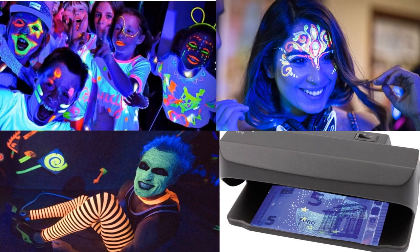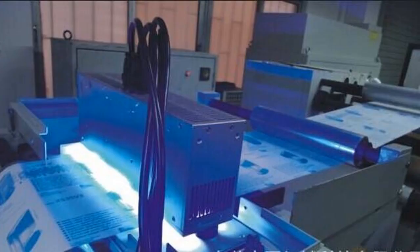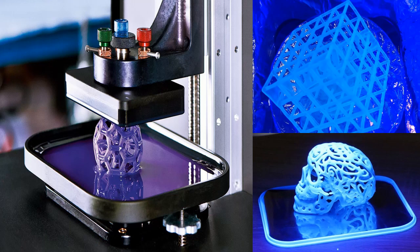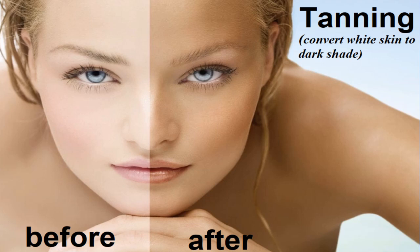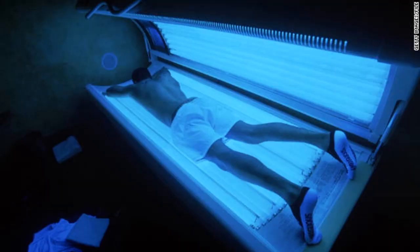UVA light is used as disco lights for fancy dress parties, for black light mimes, and for fake currency detection. UVA light is also used in lithographic and some special types of offset printing, and for UV curable liquid resin 3D printing. Short wavelength white UVA tubes are used for skin tanning because it induces more melanin production in skin. White people try to make their skin dark — this is known as tanning, achieved by beach sunbathing or by man-made UV bath tanning beds.